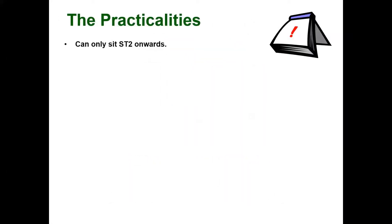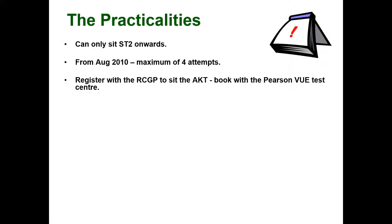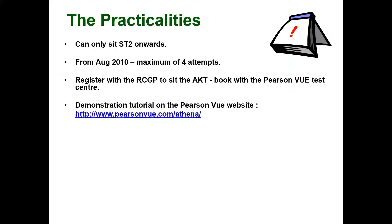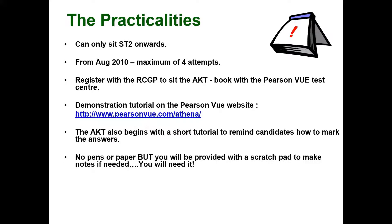I've run many courses for the AKT. Just going to talk through some practicalities. If this is your first time of approaching it, you can only sit from ST2 onwards, a maximum of four attempts. Register with the RCGP via the Pearson Vue and do run through the demonstration tutorial. There's also a scratch pad which you can use, and I'm going to tell you what to write on it to ideally optimise your pass in the AKT, specifically around the statistics aspect.